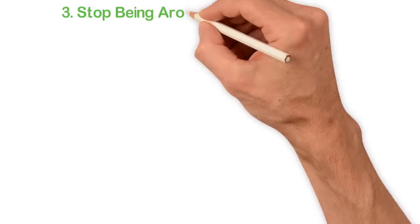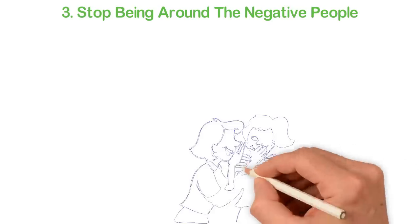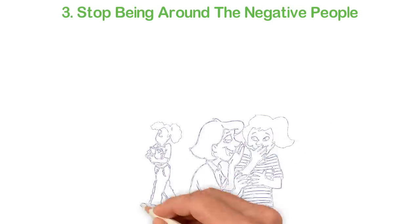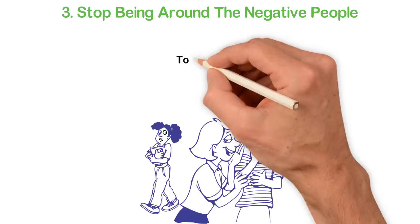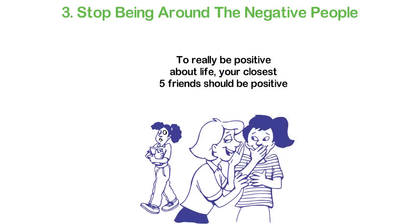3. Stop being around negative people. Most people in the world are negative. They don't believe in their ability to change their life. The problem about you being around such people is that, they will drag you to the gutter just as they drag themselves into it. To really be positive about life, your closest 5 friends should be positive.